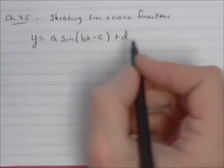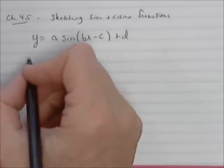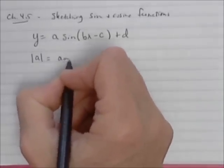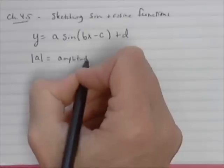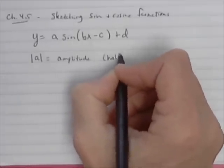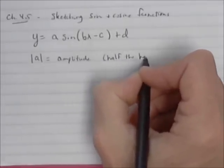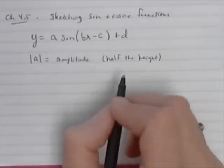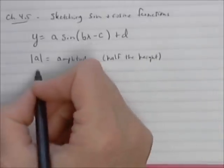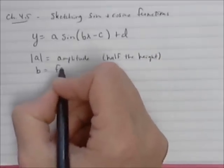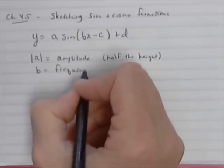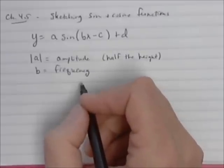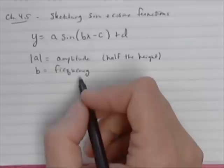a, b, c, and d are numbers. The absolute value of a is equal to the amplitude. The amplitude is half the height of the curve from the lowest to the highest point — half of the height is the amplitude. The value of b is called the frequency. Frequency means how many full cycles of a sine curve are there between zero and two pi.